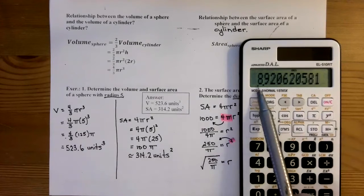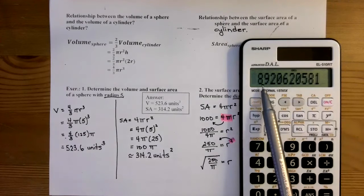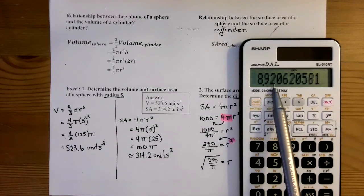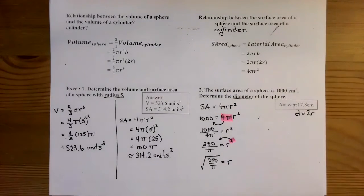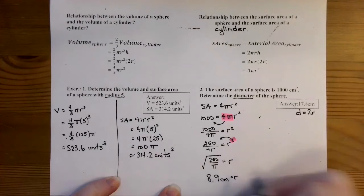And I get 8.9 centimeters. So again, it could either be 8.9 or we could round it up to 9. We look at the number after, it's a 2, so it's going to stay at 8.9. So 8.9 centimeters is equal to my radius.